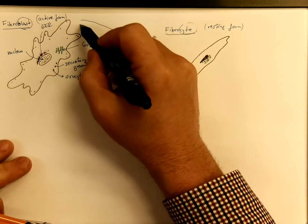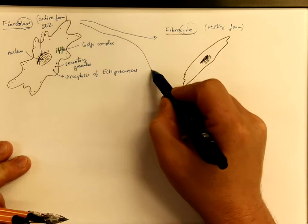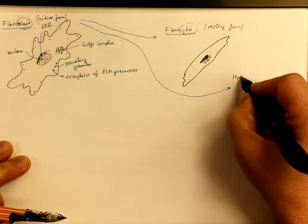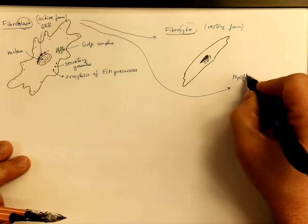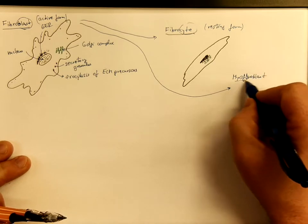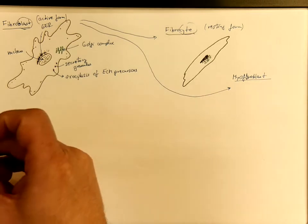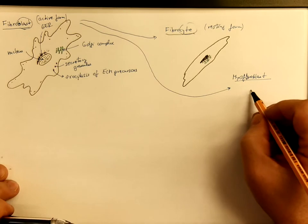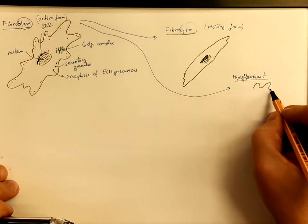Another form into which fibroblasts might differentiate is a myofibroblast. It is really similar to the fibroblasts.